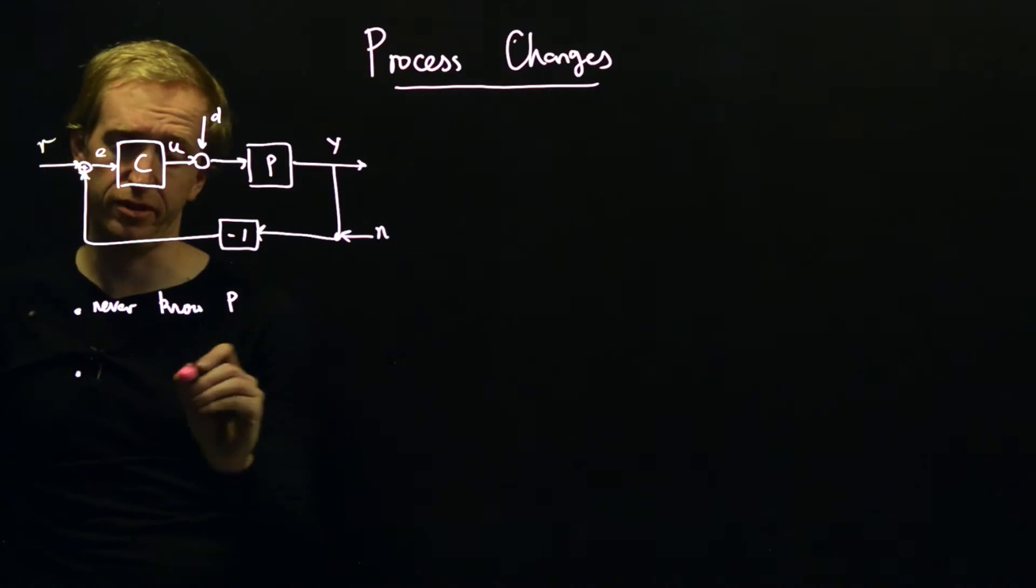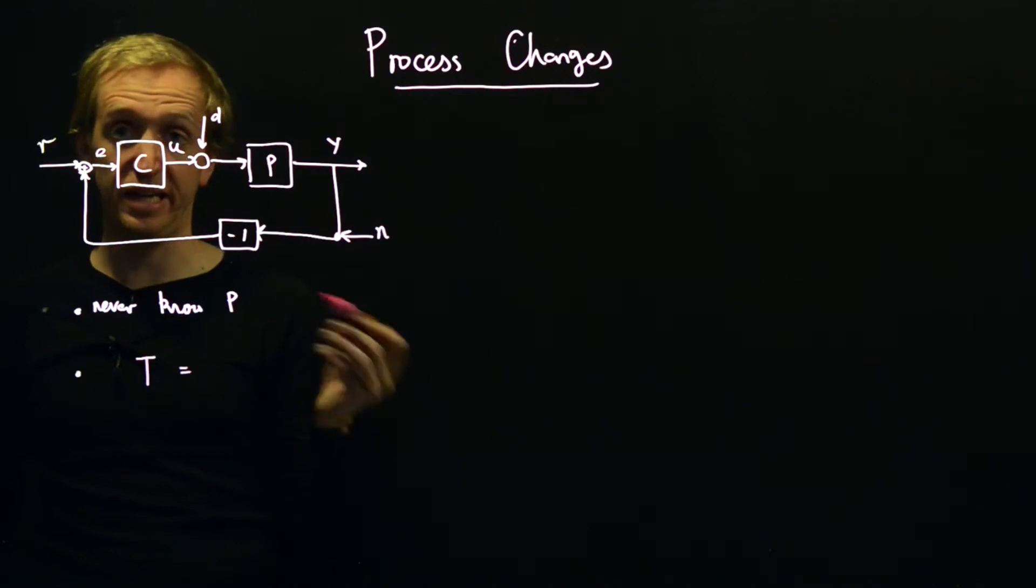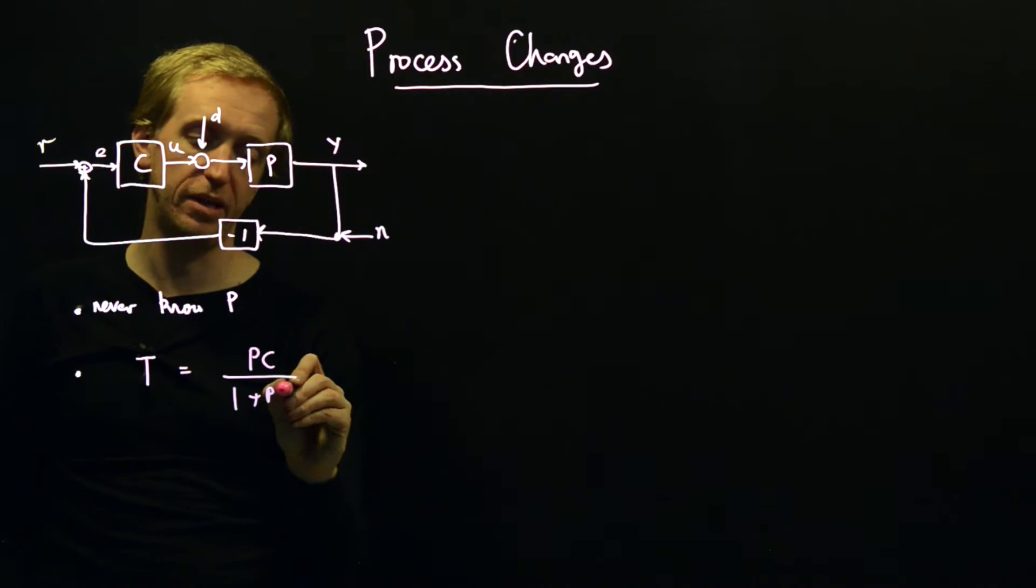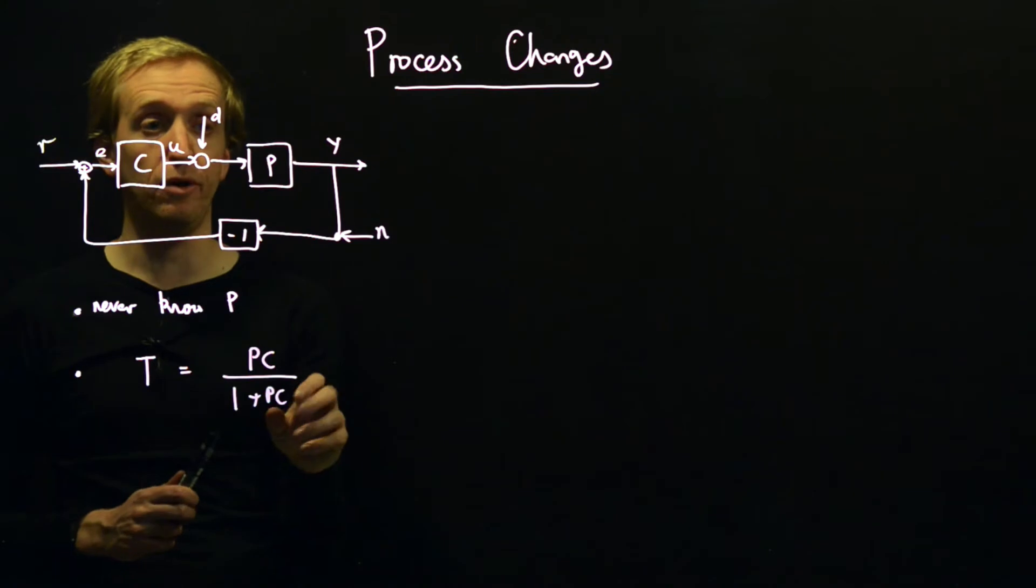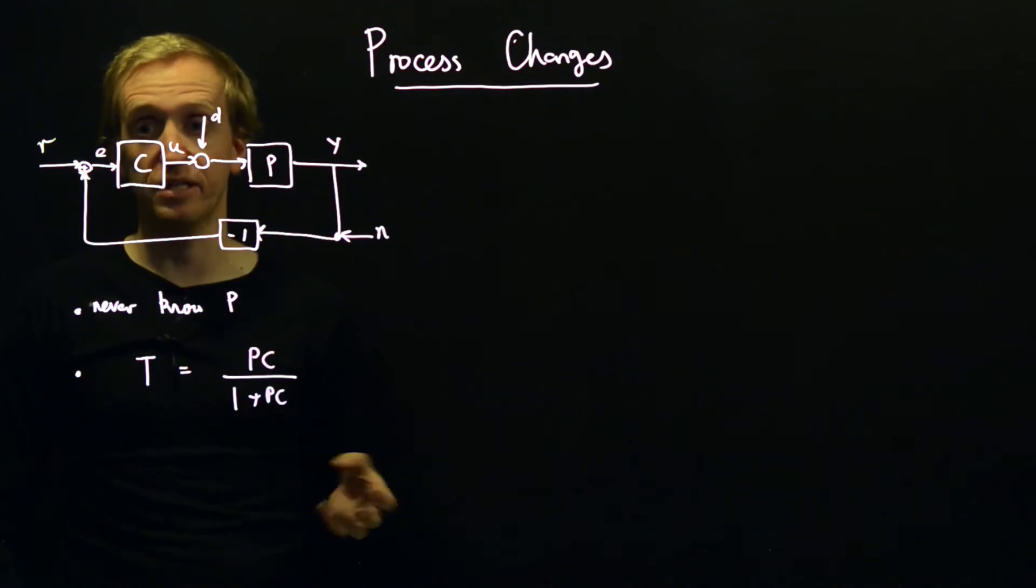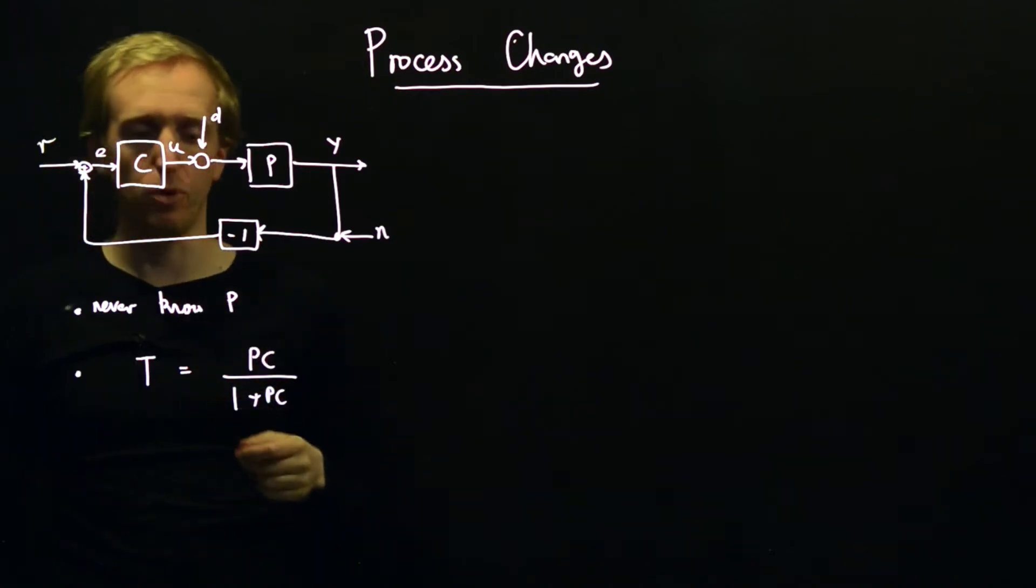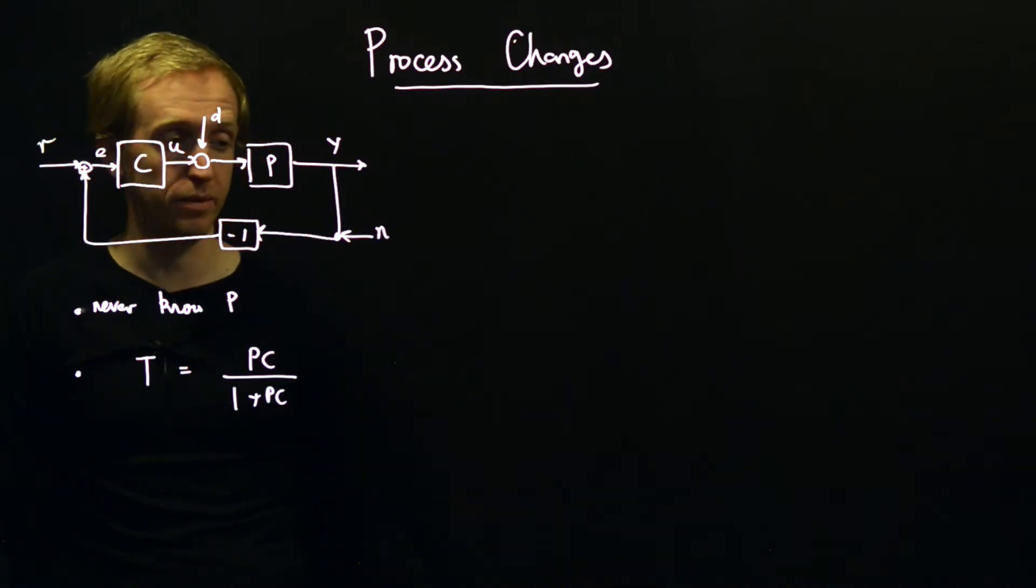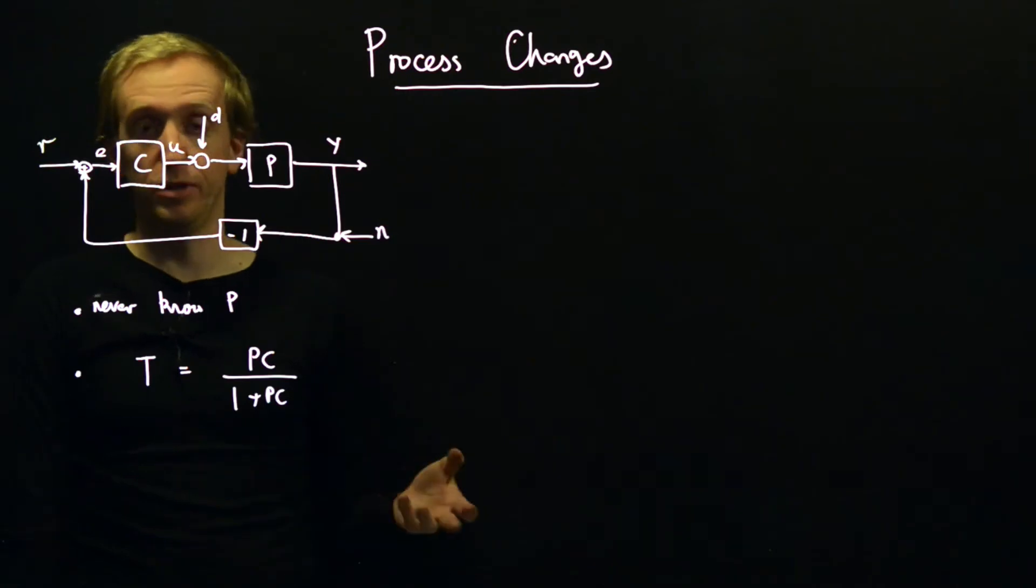So we're going to start just by investigating the complementary sensitivity function. Just to remind you, this was a particular closed-loop transfer function given by PC over 1 plus PC. And why are we studying this particular transfer function now? Well, we're looking at the input-output closed-loop behavior of our system. I know we said you actually need to go and design a pre-compensator as well. So this obviously won't translate over exactly to the full two-degree-of-freedom setup.